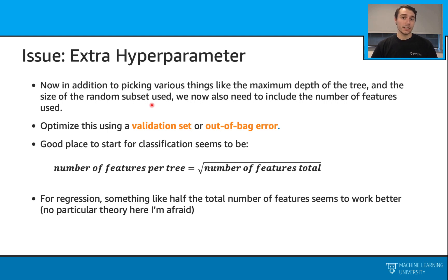Usually a good place to start for a classification problem is the square root of the number of features for this parameter. For regression, we usually go over the half of the total number of features.